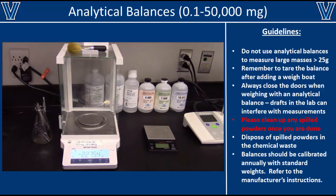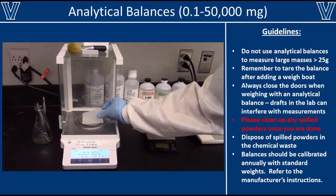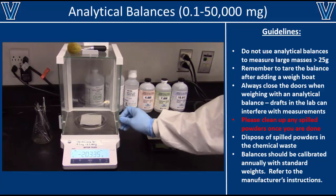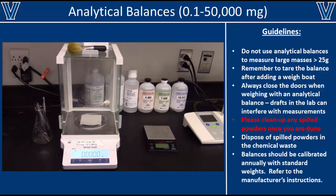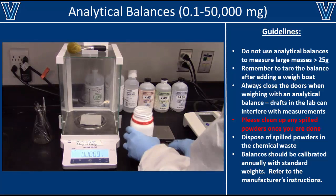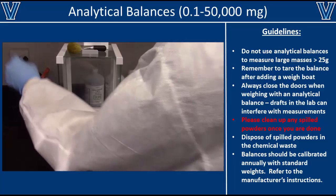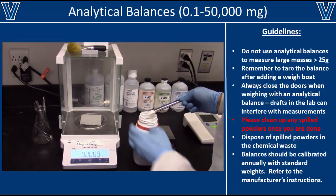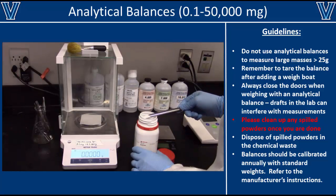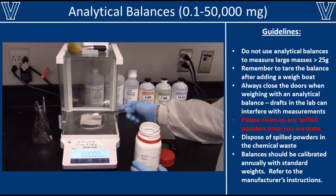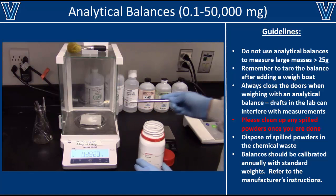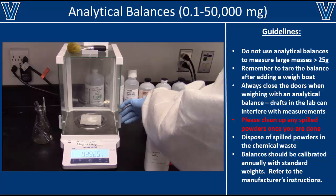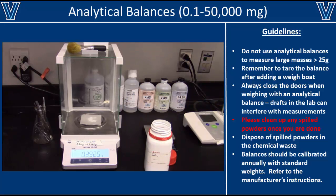To weigh masses smaller than a gram, use a weighing paper. Weighing papers are preferred because they cling less to small powders and crystals. Transfer your chemical to the weigh paper using a clean spatula or scoopula, as shown here. Slowly add the chemical to the weigh paper to prevent going over the desired weight. Check the exact weight by closing the doors on the analytical balance and giving it a few seconds to stabilize.